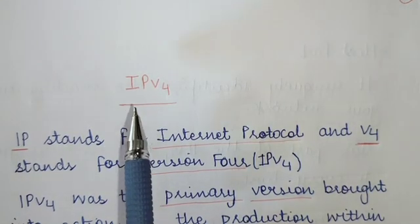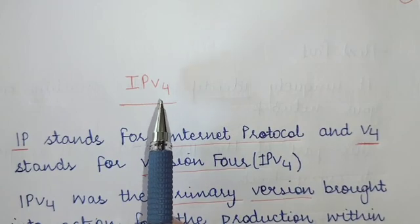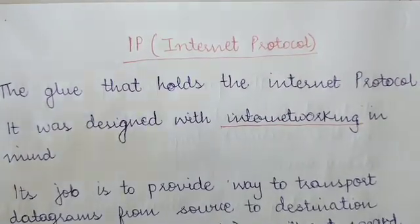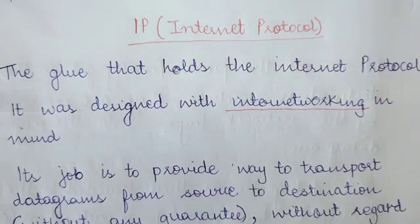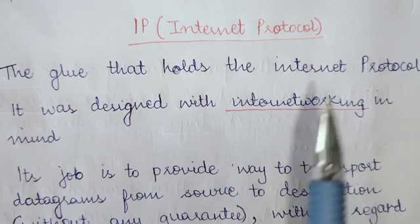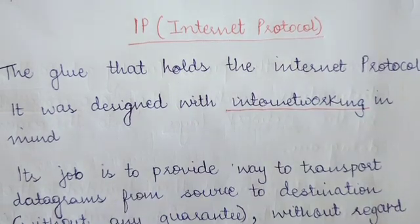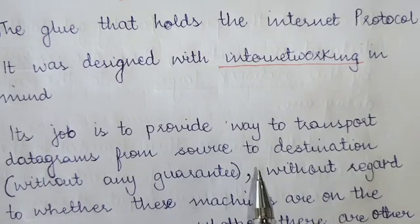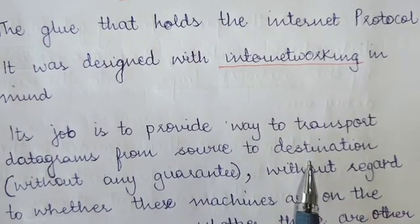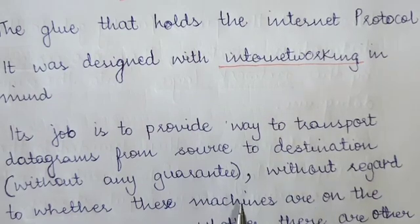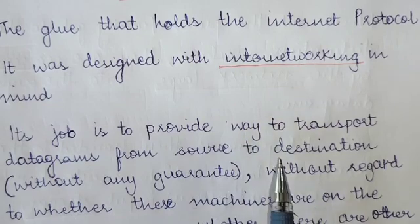Today we are going to study IPv4, that is Internet Protocol version 4. But before we start, we must know what Internet Protocol is. IP, or Internet Protocol, is that glue that holds the internet. It was designed with internetworking in mind, wherein we could exchange messages among different hosts. Its job is to provide a way to transport datagrams — the smaller units of data — from source to destination, but without any guarantee. The IP protocol is an unreliable protocol wherein there is no acknowledgement for the receipt of a datagram.